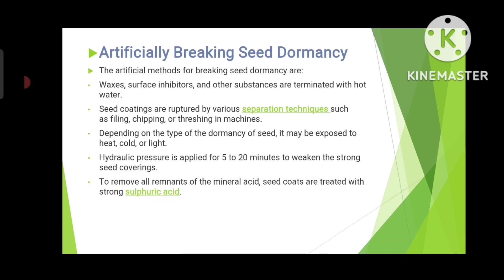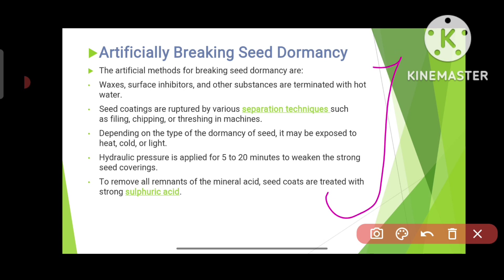Artificially breaking seed dormancy means playing an active role in breaking the dormancy of seeds. Waxes, surface inhibitors, and other substances can be removed with hot water, which can break seed dormancy and allow the seed to germinate. Seed coatings can also be ruptured by various separation techniques such as filing, chipping, or threshing in machines — since a hard seed coat prevents germination in some cases, breaking it allows the seed to germinate.